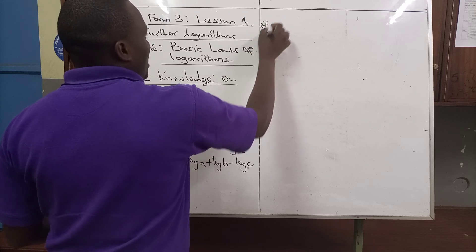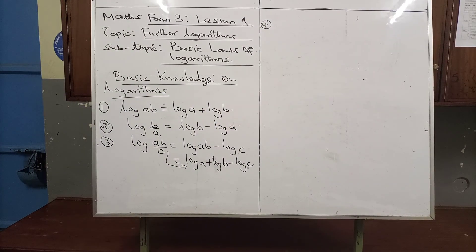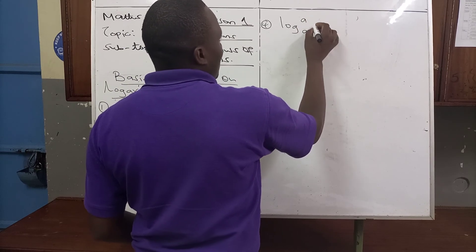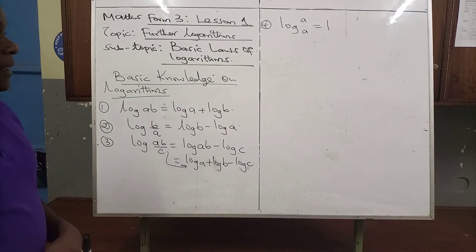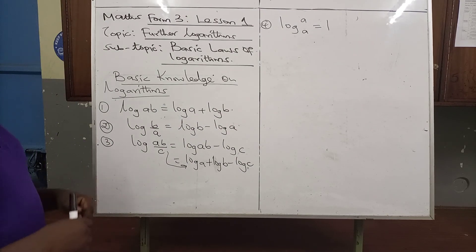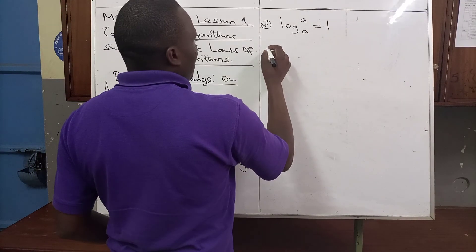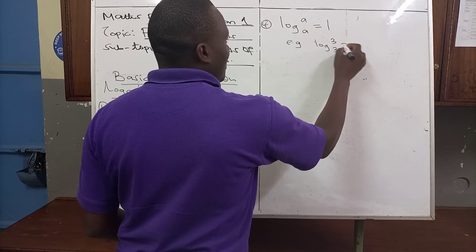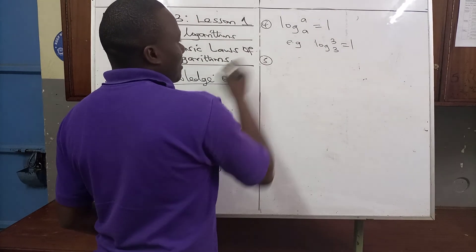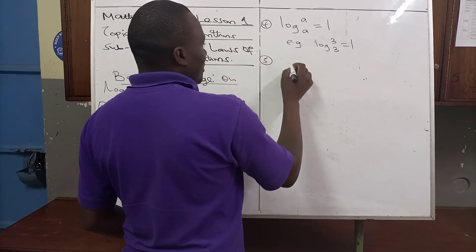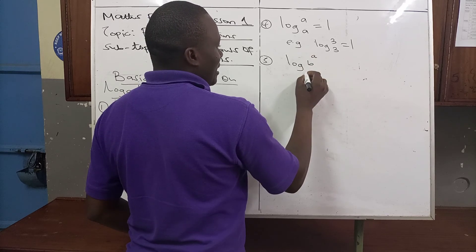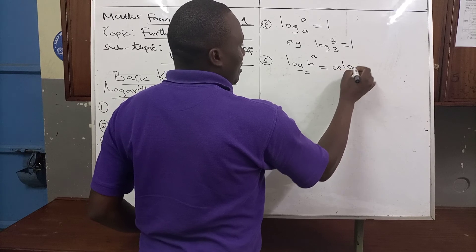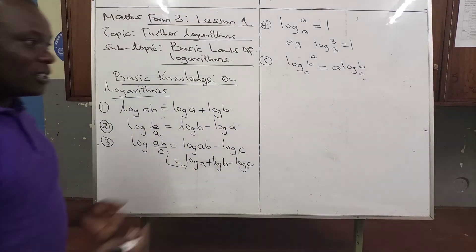Number four: when you have been given log A into base A, this equals 1. Number five: if you have been given log B to the power A into base C, we move the power in front of the log, so it becomes A·log B into base C.